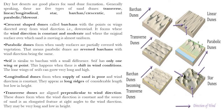Then there are parabolic dunes. They are formed where the land surface or sandy surface is partially covered by vegetation. These sand dunes are found in arid regions and semi-arid regions. In arid regions the land surface is mostly devoid of vegetation, but in semi-arid regions there may be some vegetation. So parabolic dunes are found where vegetation is covering the surface area.